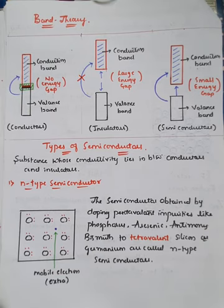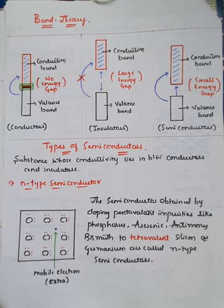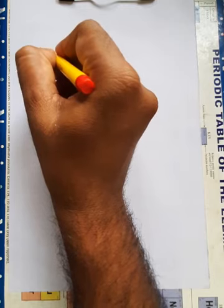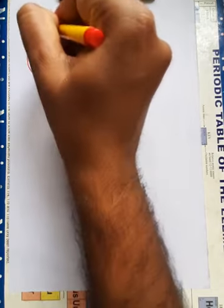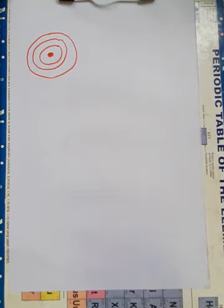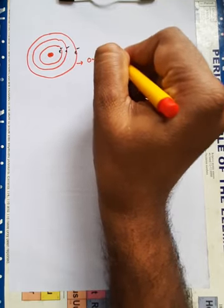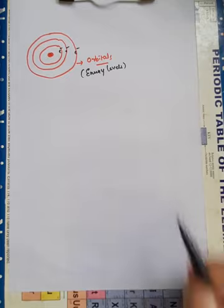In band theory, it is completely based on how electrons can jump from one orbital to another orbital. The orbitals are considered in terms of valence bands and conduction bands — energy levels or orbitals are taken in terms of bands. If you consider the atom: the center part is the nucleus, surrounded by orbitals where there is a high probability of finding the electrons. These are generally called energy levels. The electron may be present in the first orbit, second orbit, or the last orbit.